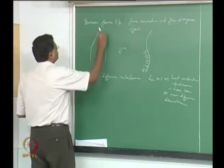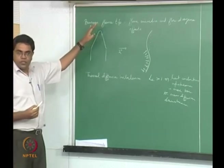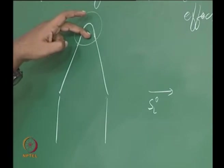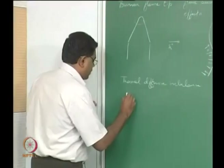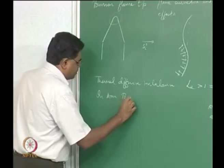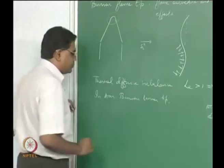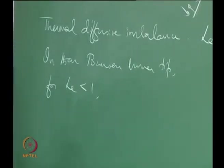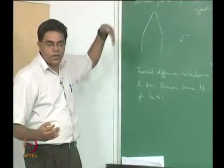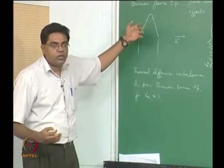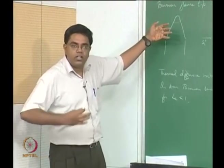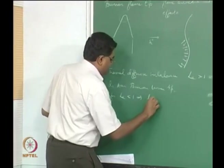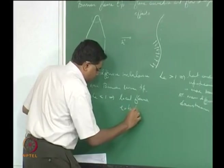At the tip of the flame for Le > 1, we expect more intense burning and increased flame speed that can try to match the flow speed there. But at the Bunsen burner tip for Le < 1, there is a greater extent of deficient species depletion compared to upstream heat conduction. The flame is essentially running out of reactant even while trying hard to conduct heat upstream. So this could lead to a local flame extinction.